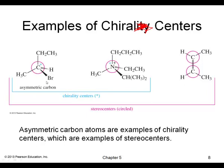Here we have an asymmetric carbon because each of the four groups are different from one another. The same applies to nitrogen: if I have four different groups on a nitrogen, it's also a chiral center. Asymmetric carbons are examples of chiral centers, also called stereocenters.